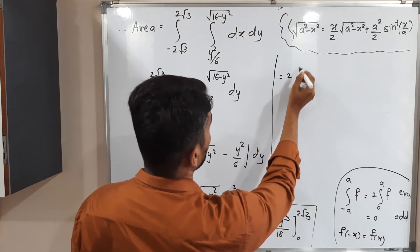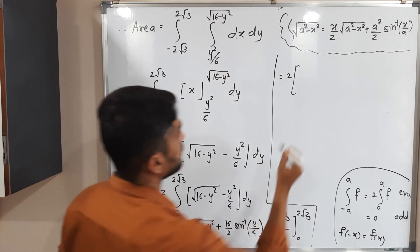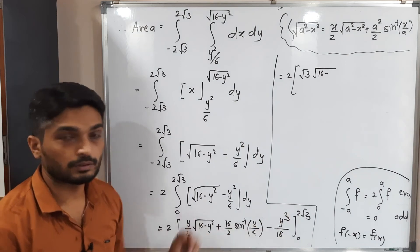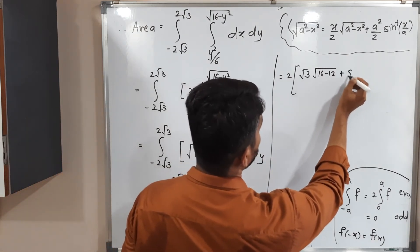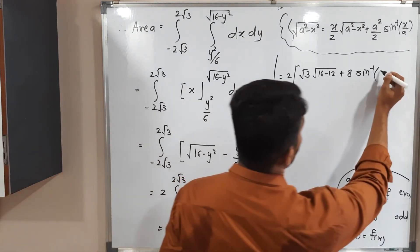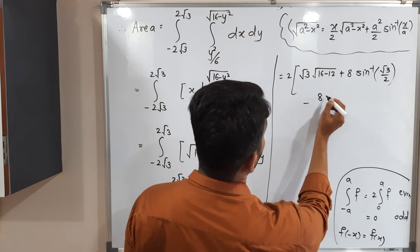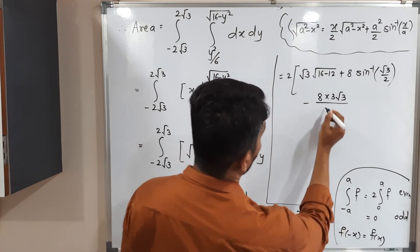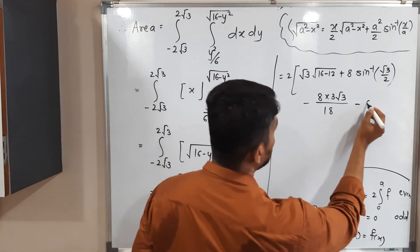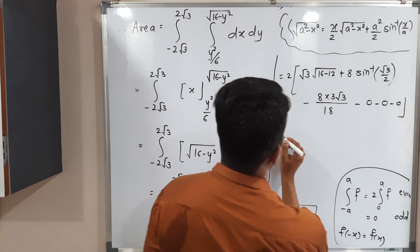Substituting the upper limit y = 2√3: (2√3/2)√(16-12) + 8·sin⁻¹(2√3/4) - (2√3)³/18 = √3·√4 + 8·sin⁻¹(√3/2) - 24√3/18. At the lower limit y = 0, everything evaluates to 0. So we have 2[√3·2 + 8·sin⁻¹(√3/2) - 24√3/18].